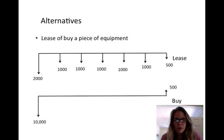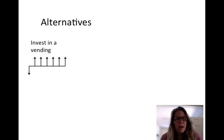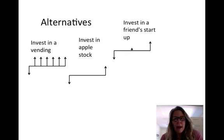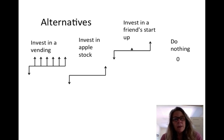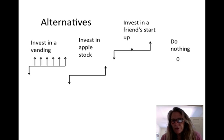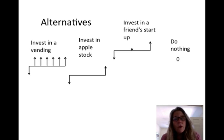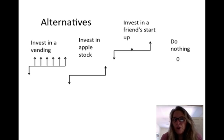Another example of the kinds of alternatives you might define: you might have a whole bunch of different options — you can invest in a vending machine, invest in Apple stock, invest in a friend's startup, or do nothing. This is an example of the do-nothing alternative. These all have different cash flow shapes, different initial values, and different ongoing values. In this case, these are actually not mutually exclusive — you can do the vending machine and Apple stock and the friend's startup, so you can look at all the different combinations.